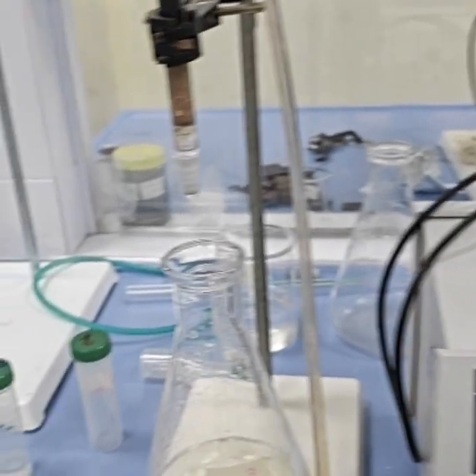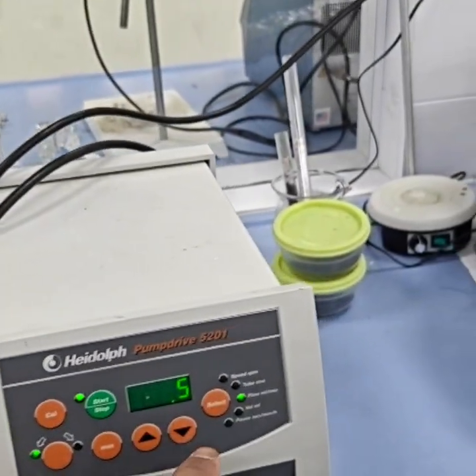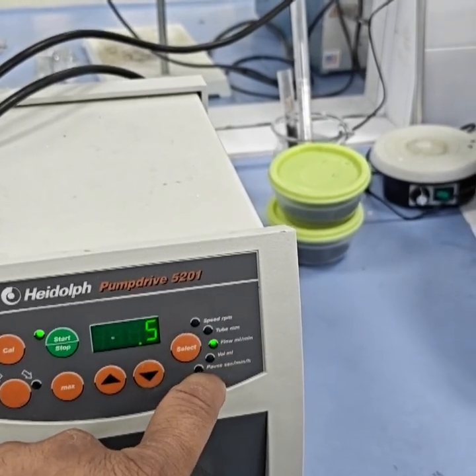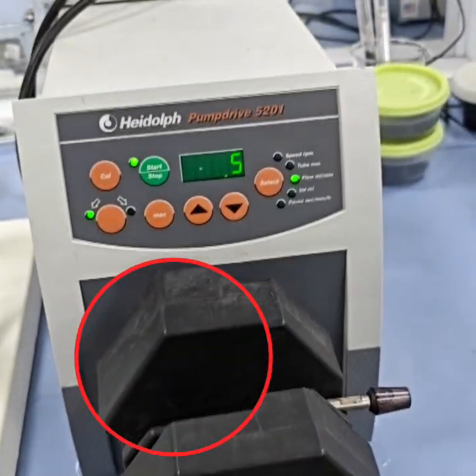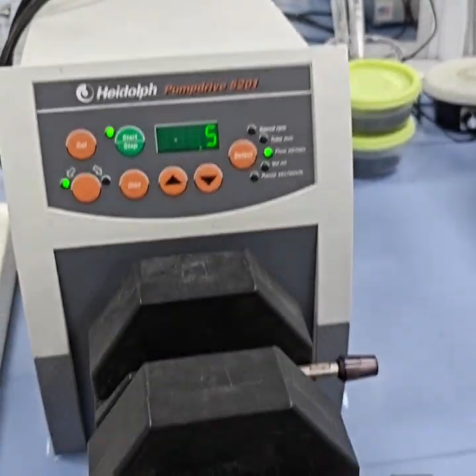You can see here the flow rate is set for 0.5 ml per minute. With this tubing, the water is sucking the water from here and then the water is passing through the column from the top to the bottom.